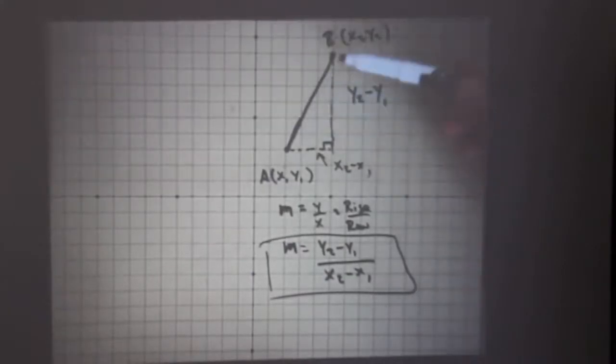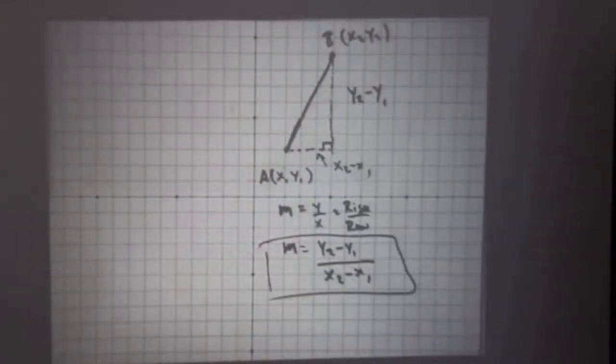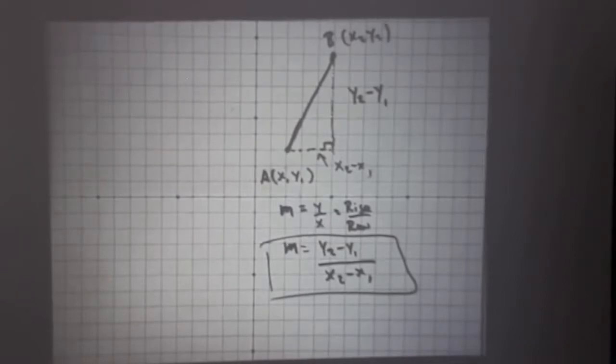The distance of the vertical piece is always the difference of the y's, y2 minus y1. The distance of the horizontal piece of the line is always the difference of the x's, x2 minus x1. And then rise over run to build slope.